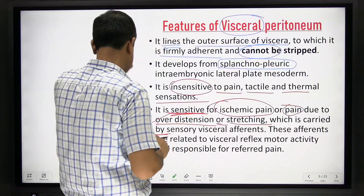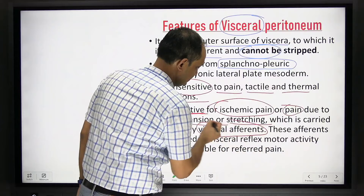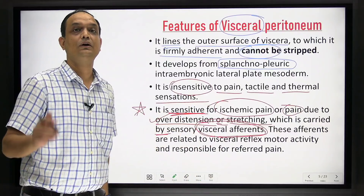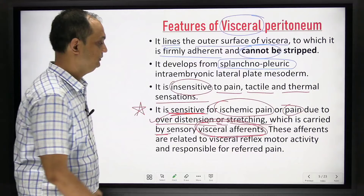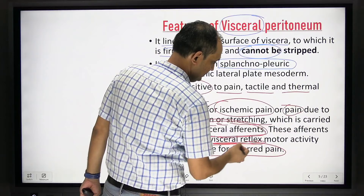Visceral sensations are carried by visceral afferents, which enter through the autonomic nervous system. These afferents are related to visceral reflexes — the viscera will react against these sensations. They are also responsible for referred pain. Referred pain occurs because of shared spinal cord segments between visceral and somatic afferents.